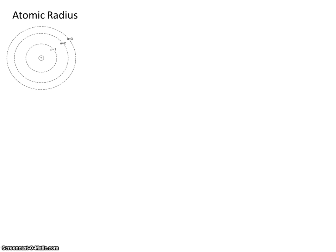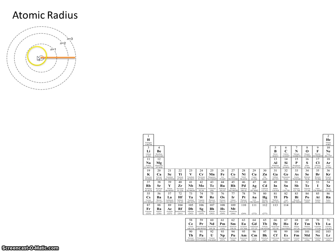Now you can probably guess what the atomic radius is. The radius, of course, is just the distance measured from the nucleus to the outer, or valence, electrons.